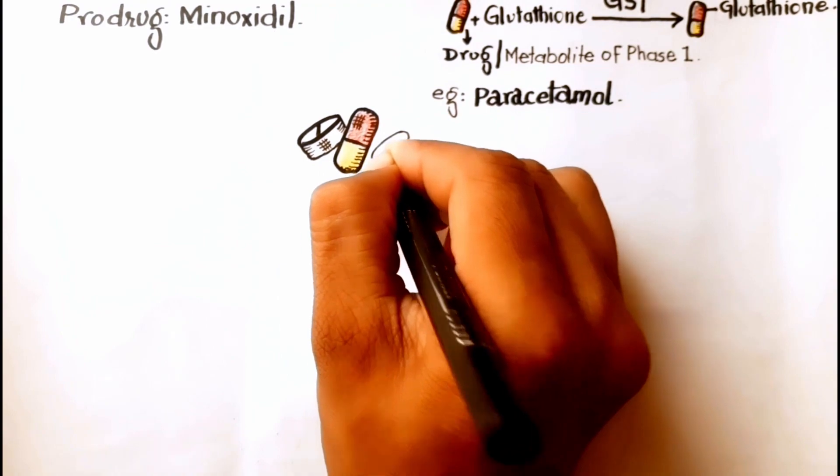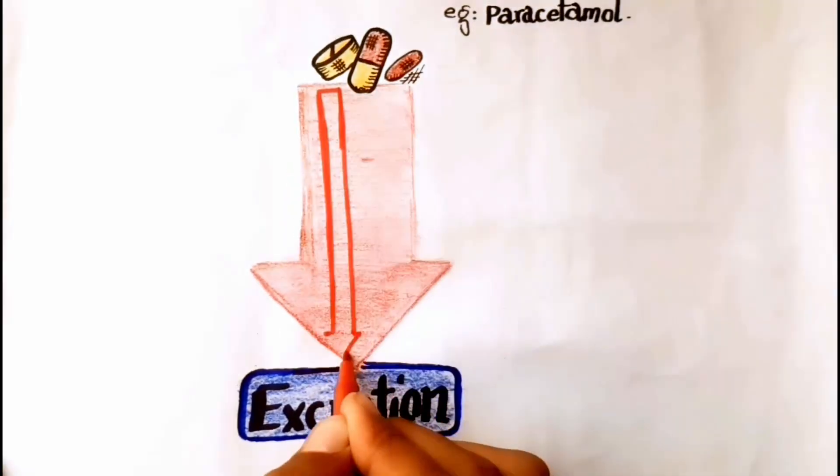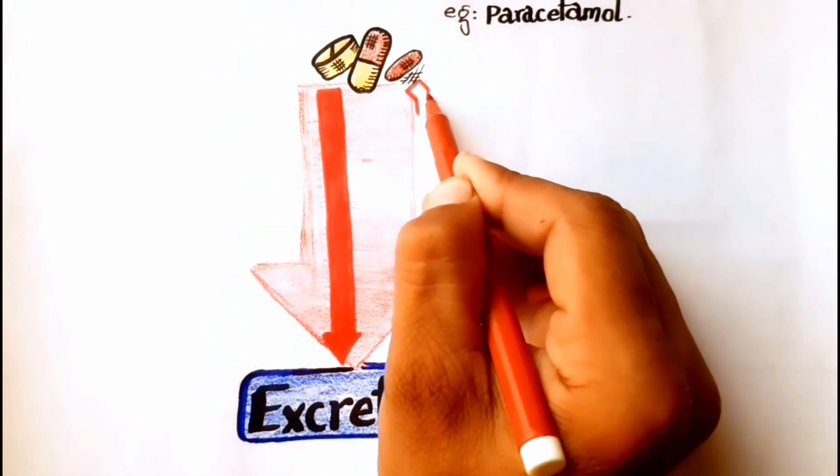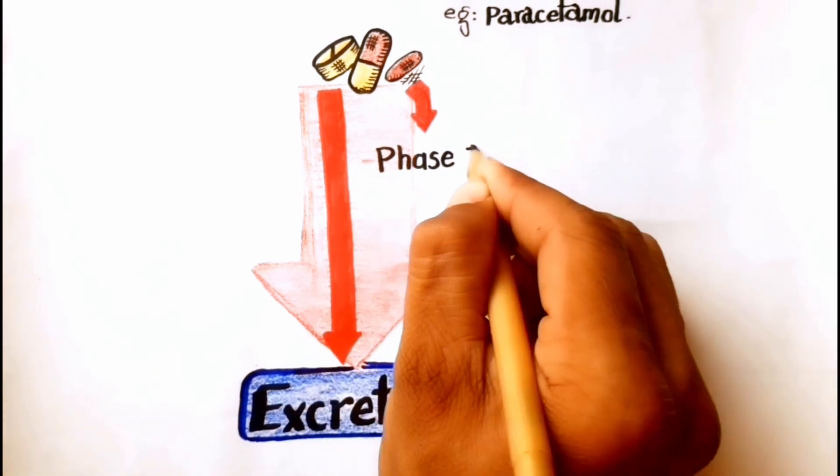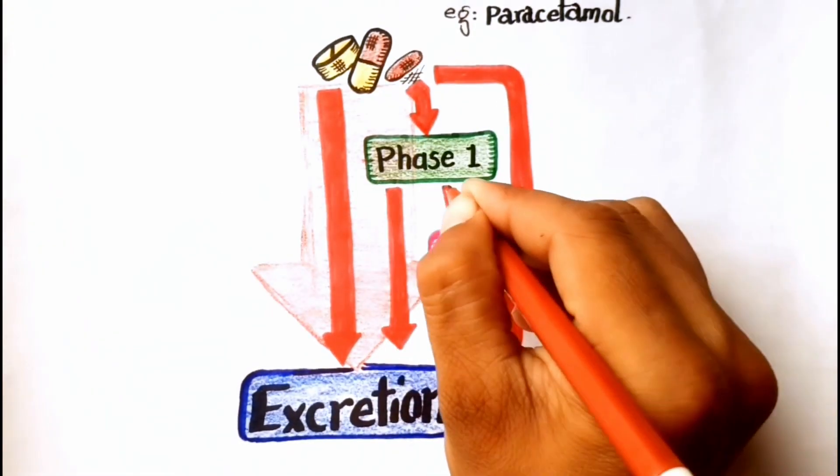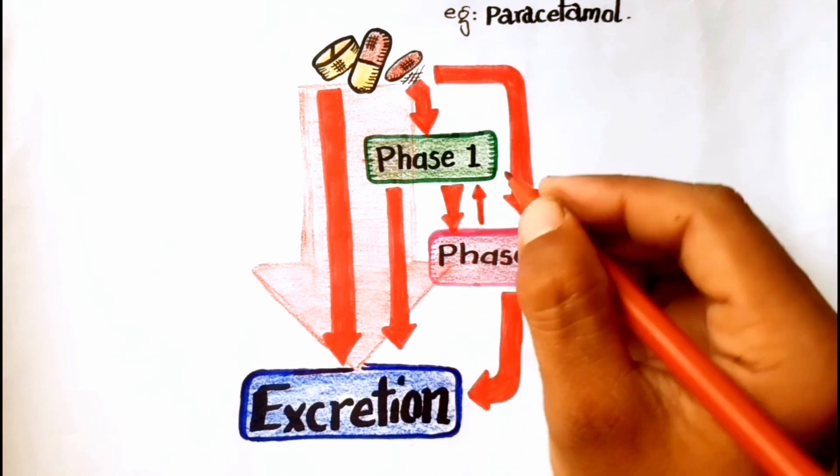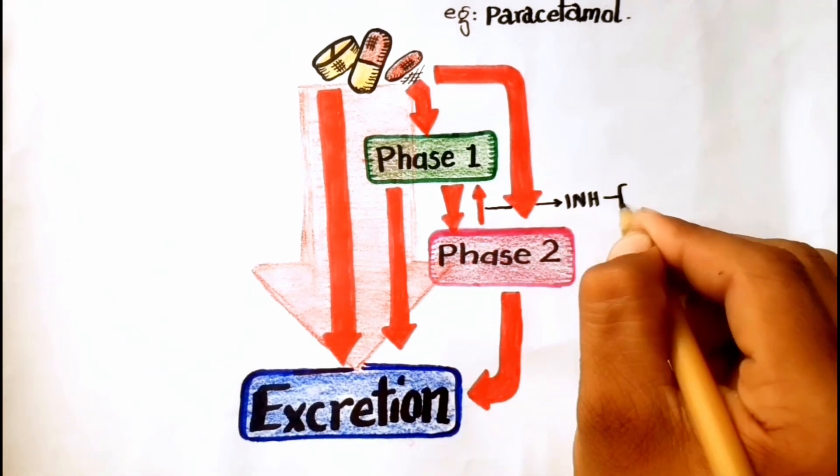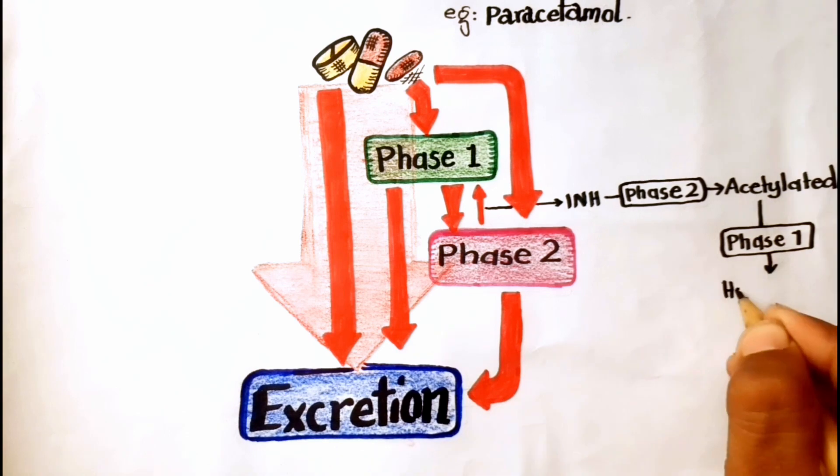Metabolism of drugs is mainly done for elimination and excretion. Although some drugs are excreted as such from the body, large numbers undergo metabolism. Some drugs only follow phase 1 or phase 2 metabolism and are excreted. But most drugs undergo phase 1 followed by phase 2 metabolism. In contrast, only a few drugs first undergo phase 2 followed by phase 1 reactions. Like isoniazid is first acetylated by phase 2 metabolism and then undergoes phase 1 hydrolysis reaction.